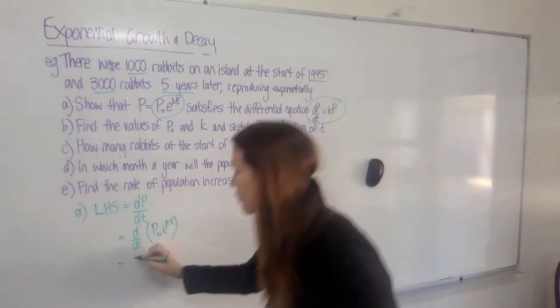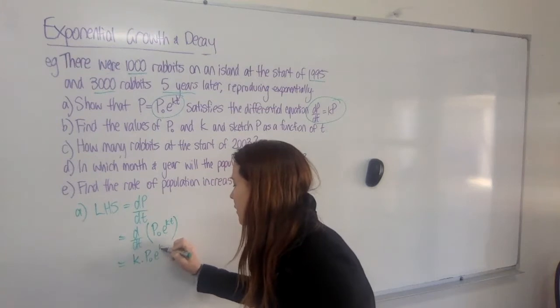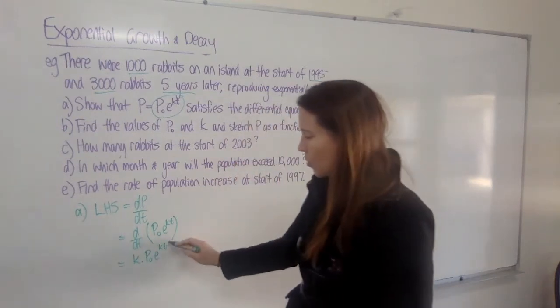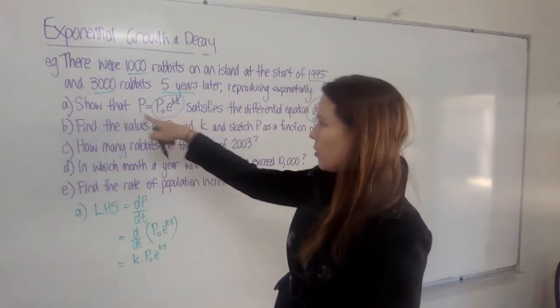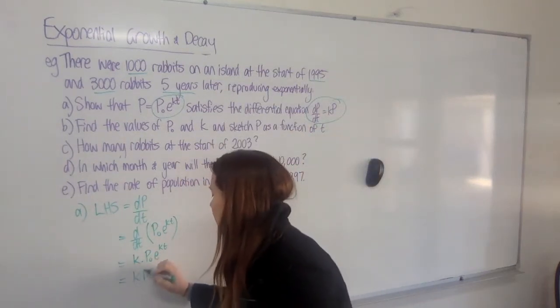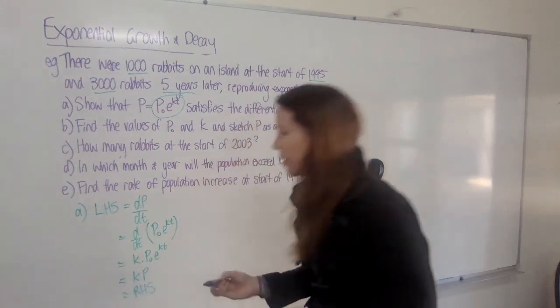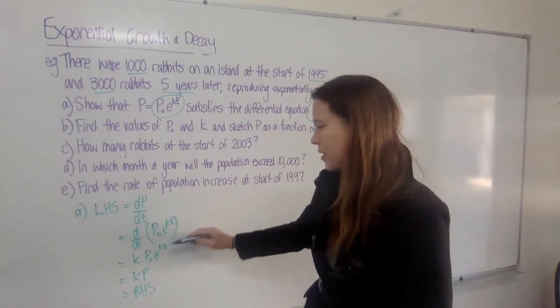I bring the k down the front, and then I have to rewrite the rest of the index expression like that. And then, of course, all of this part equals P, we know, because that was given to us. So we can now sub in P there. And that is now equal to the right-hand side.